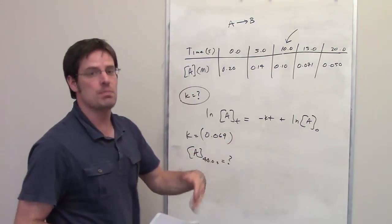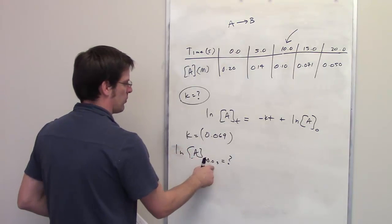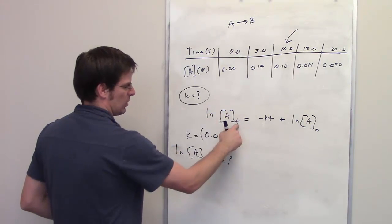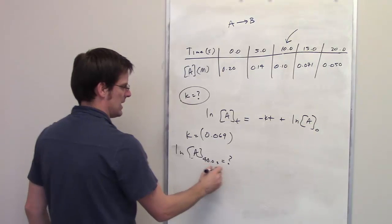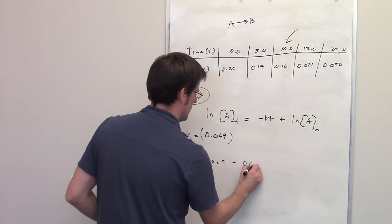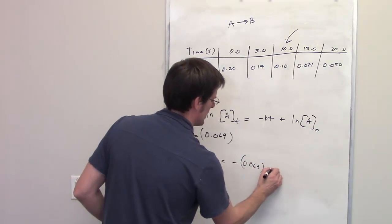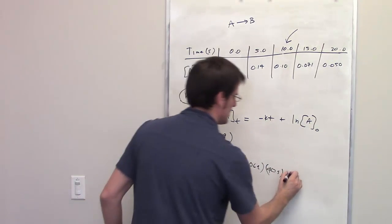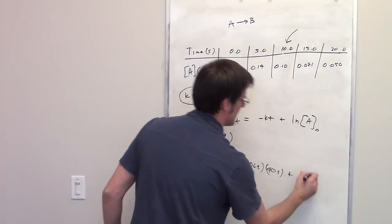So I do that by using this equation. The ln of A at 40 seconds, that's this term right here where I've replaced 40 here for t, is going to be equal to negative k, k is 0.069, multiplied by 40 seconds. That's our time t, plus the ln of A at time zero.